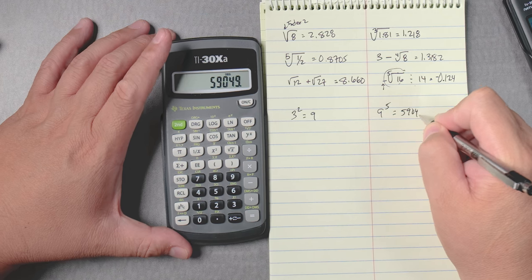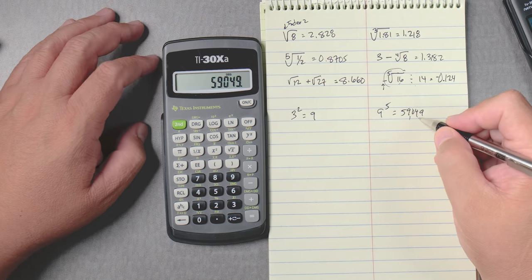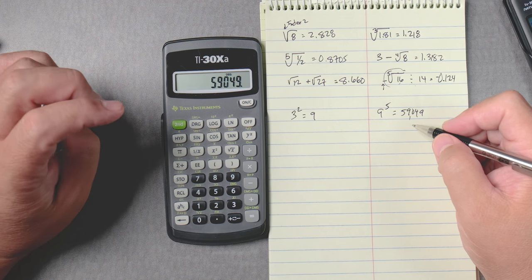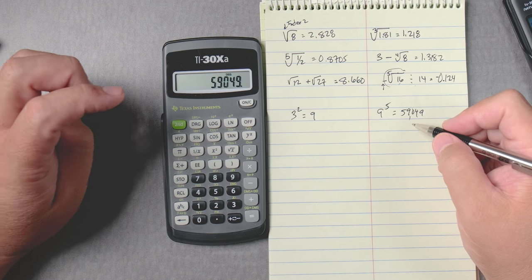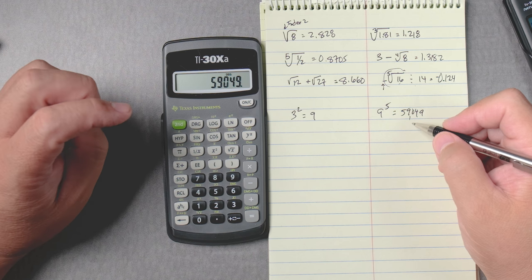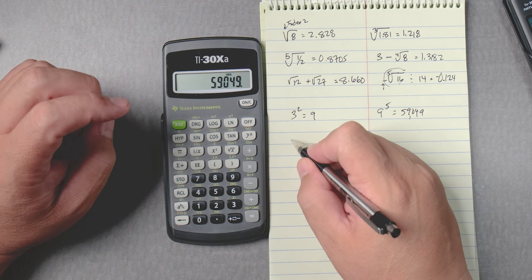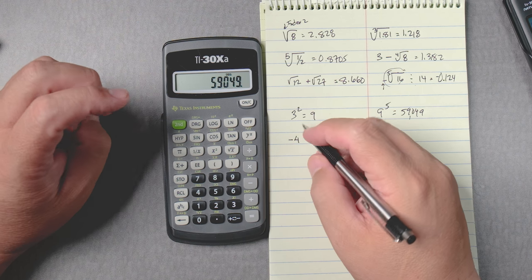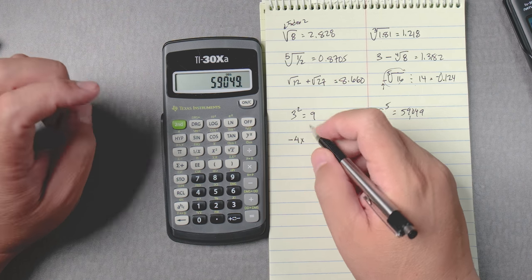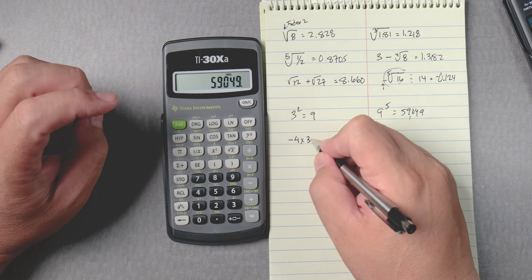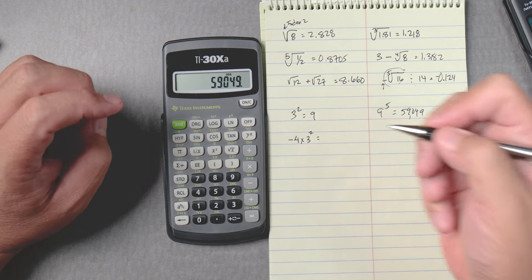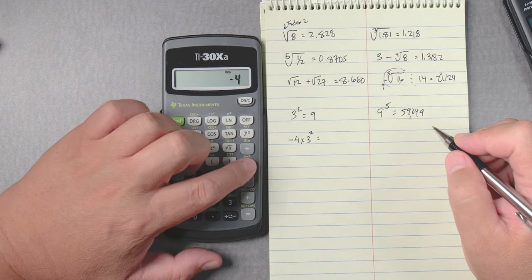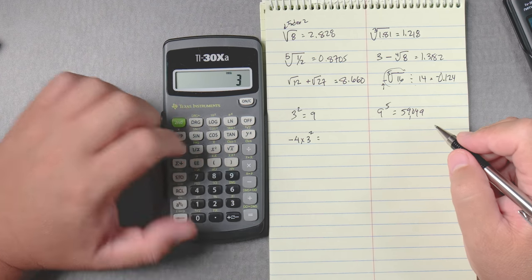Let's do something like negative 4 times 3 to the second power. So we go 4 negative times 3 and then we do the squared equals negative 36 which sounds about right.